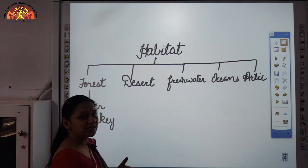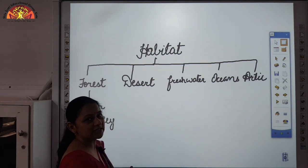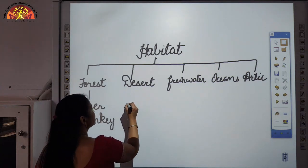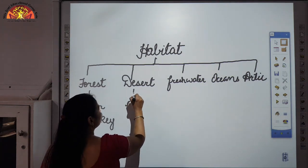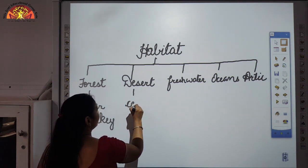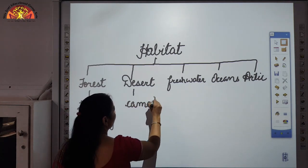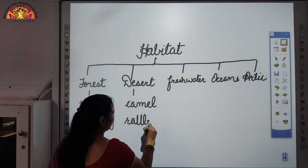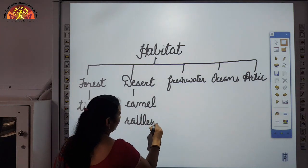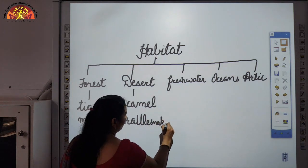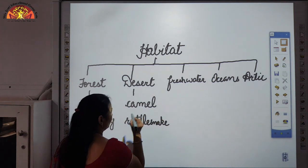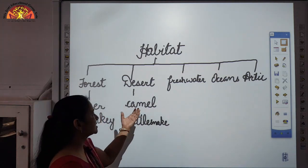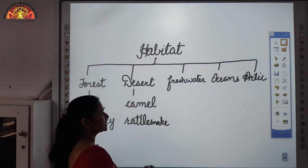Desert is a place where there is very less vegetation and very less rainfall. The animals that live here are camel, rattlesnake, phoenix fox, and ground squirrel. These are the animals which live in the desert.